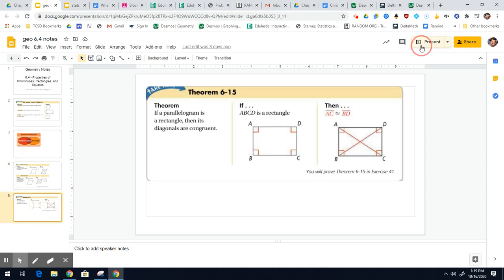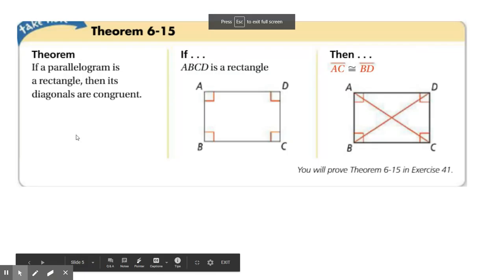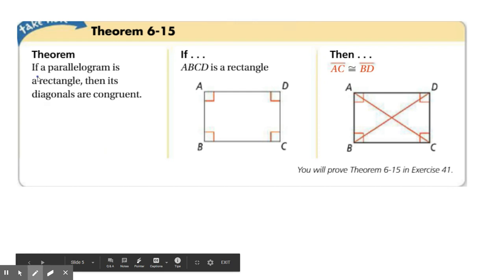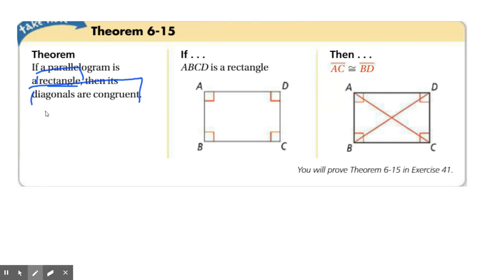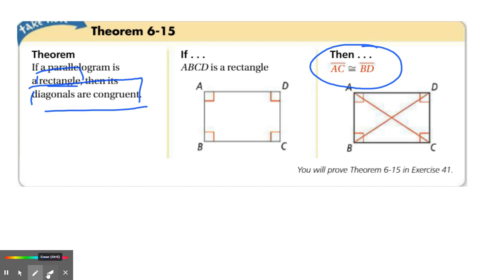And then what about our rectangle? A rectangle has one special property: its diagonals are congruent. So AC and BD are congruent. If you think about it, you're taking a parallelogram and tilting it upright, so it's perpendicular. In a parallelogram the diagonals were not congruent, but because you're tilting it upright, now your diagonals are congruent.